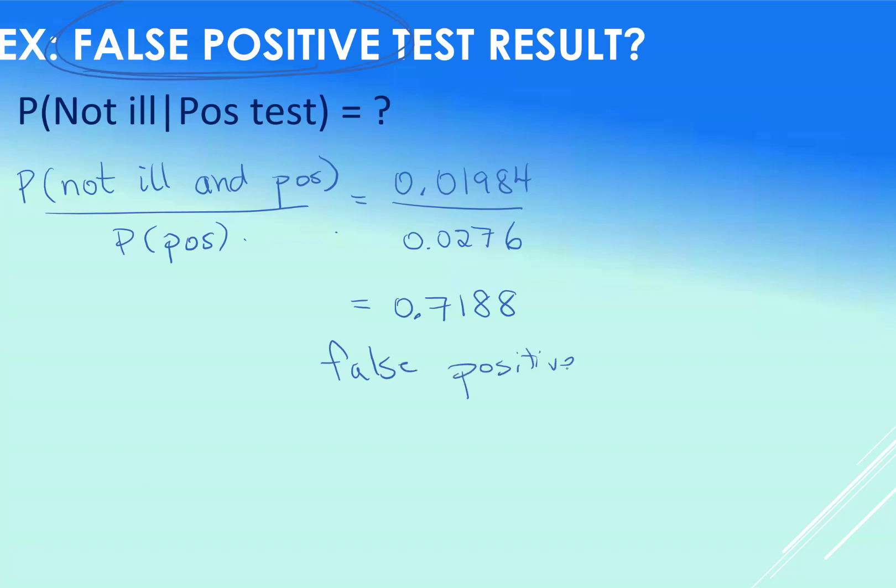How do they mitigate this? Well, like we say, in any case, increase your sample size. So they do this test more than once. So they don't just run it once on the blood work because this is a surprisingly high false positive result that can happen.